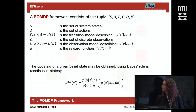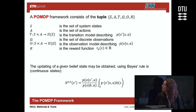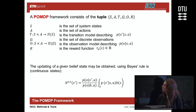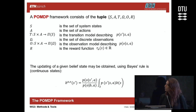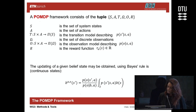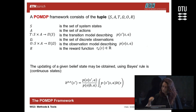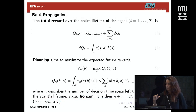The POMDP framework comprises a tuple of six components: the set of states, the set of actions, the transition model describing evolution from one state to another, the set of discrete observations, the observation model, and the reward function. Our confidence in the state or condition of the system — the belief — may be obtained using Bayes' rule.